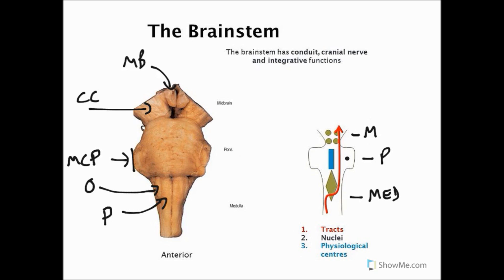First of all we need to think about its conduit functions — meaning tracts. Remember that every tract needs to pass through the brainstem, coming from the body or trunk or going to the body and trunk. The corticospinal tract, which is voluntary motor control, would travel from the cortex down and through the brainstem and eventually to the limbs. Sensory information coming in also has to run through the brainstem, eventually making its way to the thalamus and cortex.